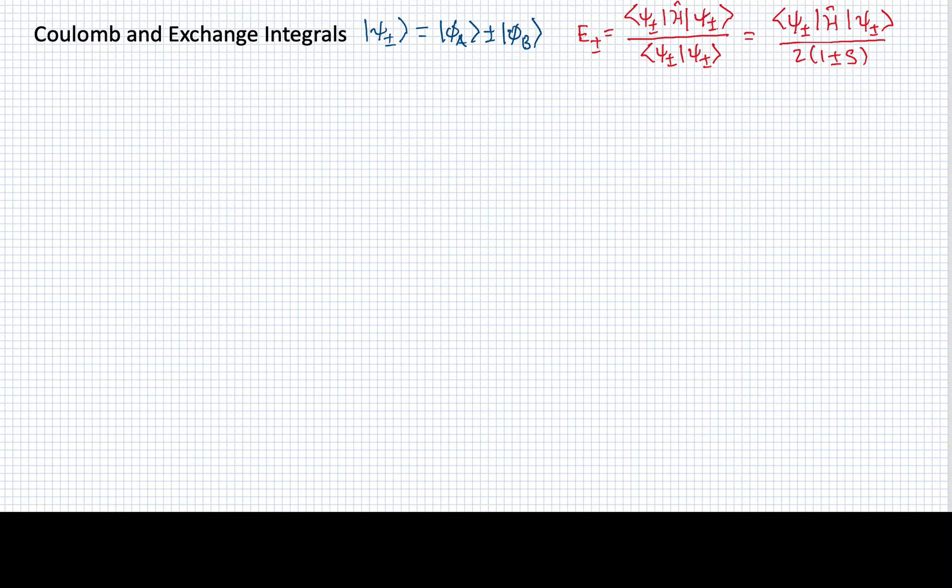In treating the system H2+, we have chosen to express its wave function as a linear combination of atomic orbitals, which are represented by phi A and phi B. So this is an LCAO, and I'll call it an MO, a molecular orbital.